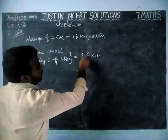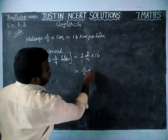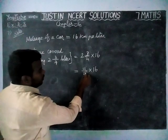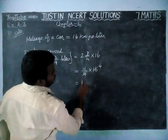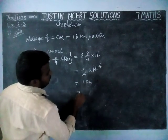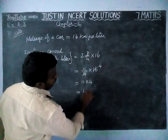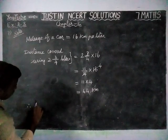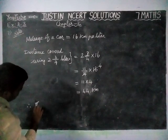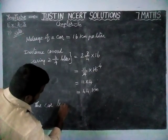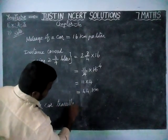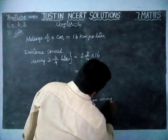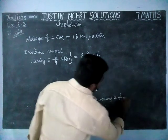4 twos are 8, and 8 plus 3 is equal to 11, so we get 11 divided by 4, into 16. If it is possible to simplify, we can simplify: 4 goes into 16 four times, so 11 into 4 is equal to 44. Therefore, 11 fours are 44 km.